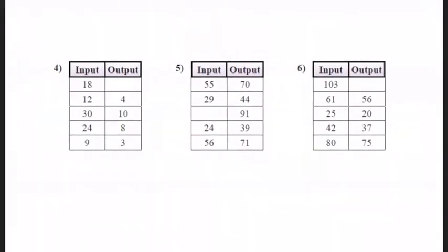Okay, so here's the answers. So for number 4, we are dividing by 3. So when you divide by 3, this answer here is 6. For the next one, we're adding 15. So this answer is 76. For the next one, we're subtracting 5. So that answer is 48.